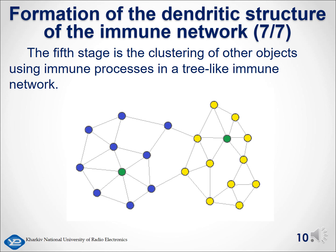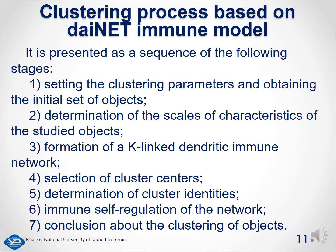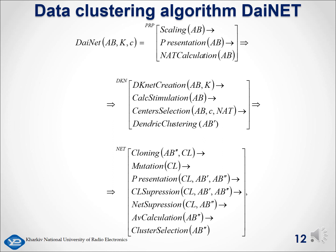This slide shows the result of artificial immune network clustering of antibodies distributed between two different clusters. Thus, the process of object clustering based on the dendritic immune model can be represented as a sequence of the following stages, shown on this slide. Accordingly, at the level of immune operations, the dendritic method is represented by the implementation of the relevant stages presented on this slide: namely, the stage of preparation for clustering, the stage aimed at the formation of the K-connected immune network, and the stage of network interaction.